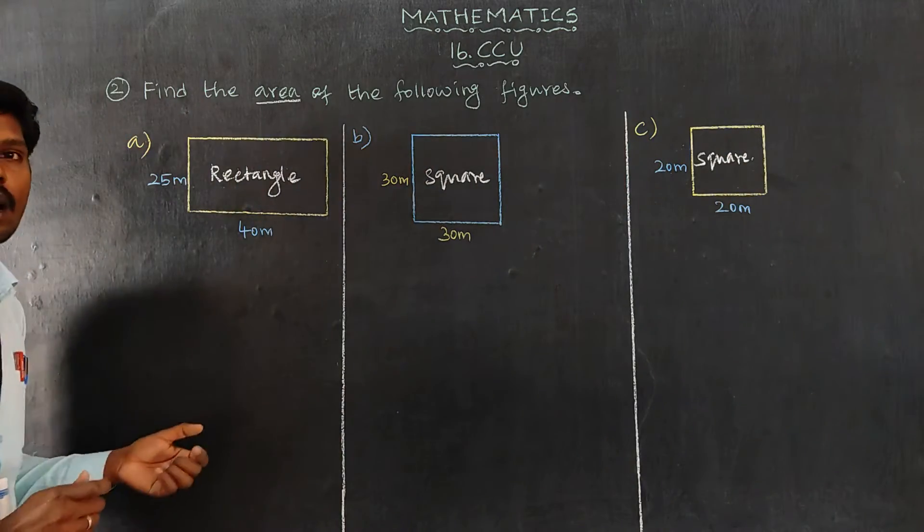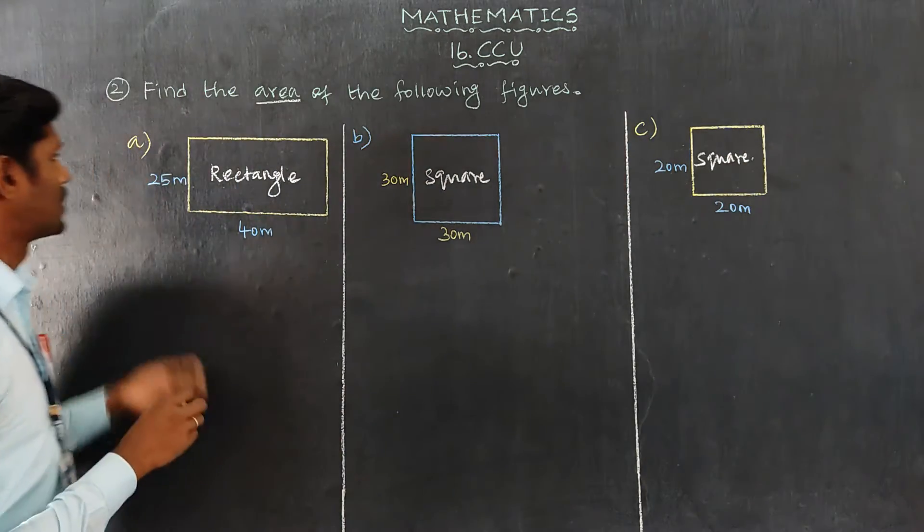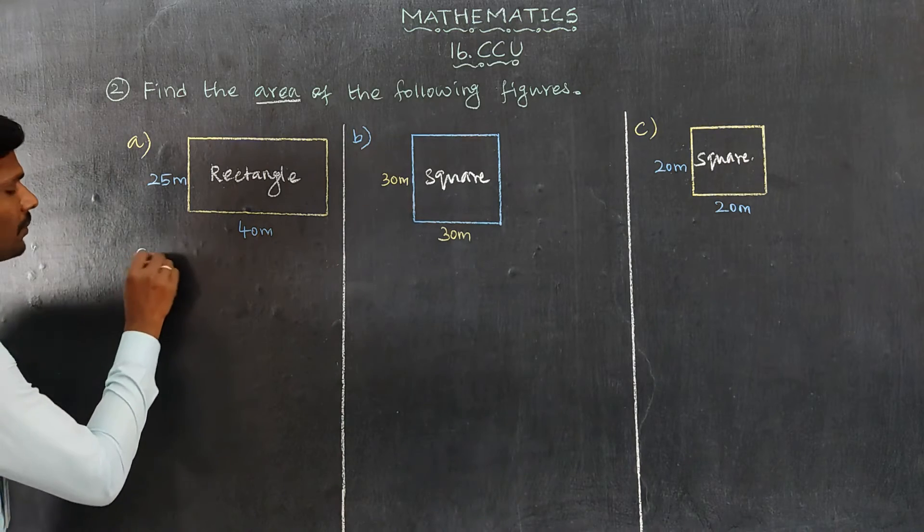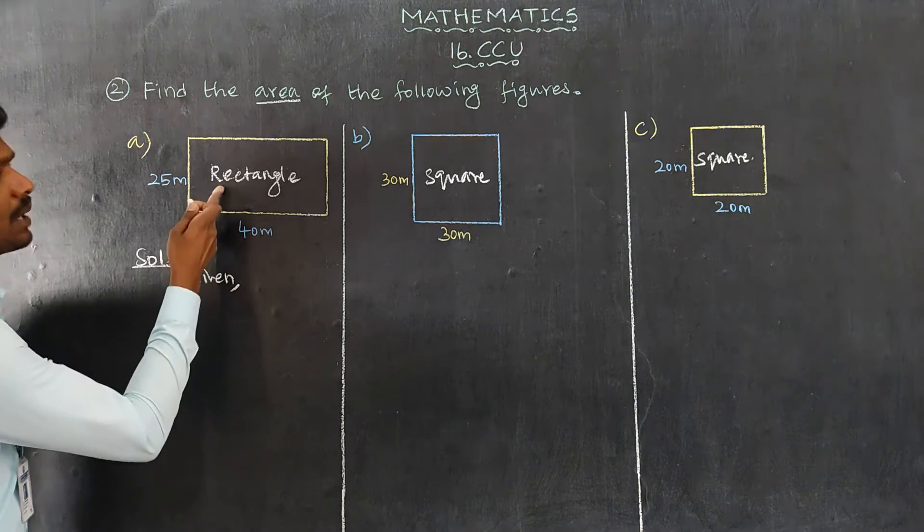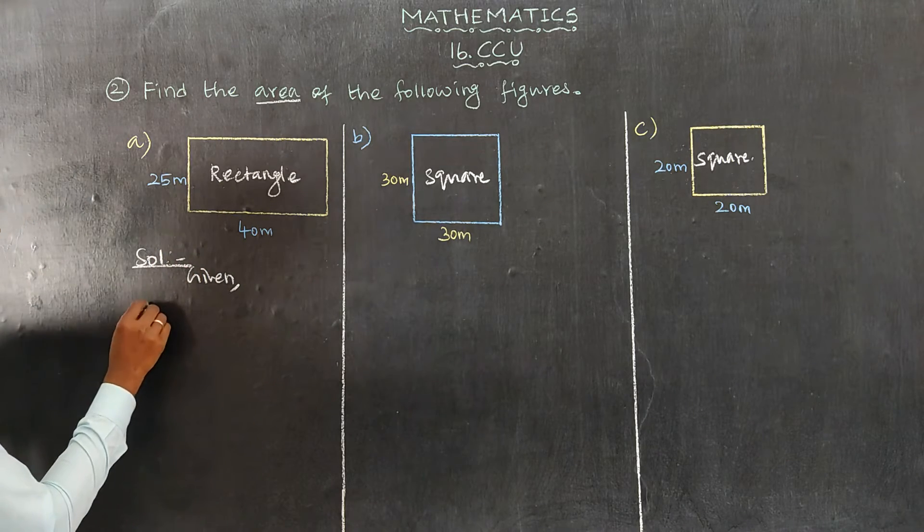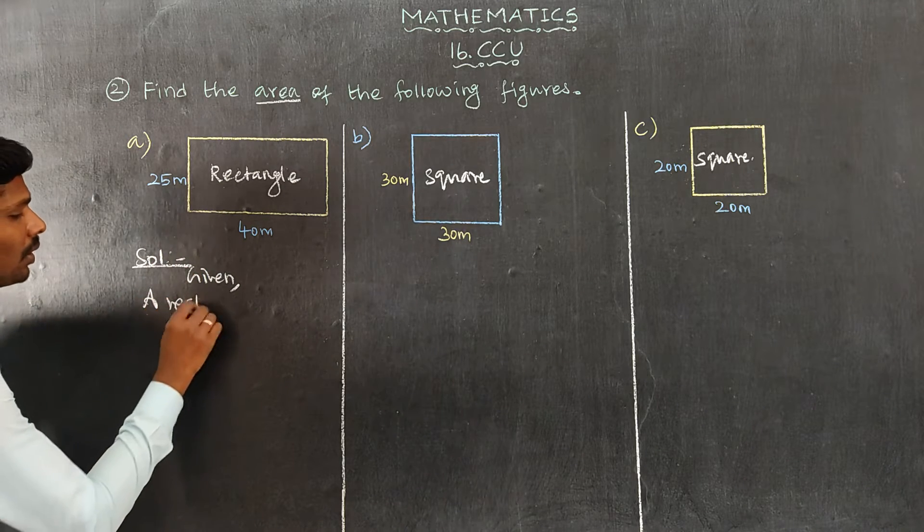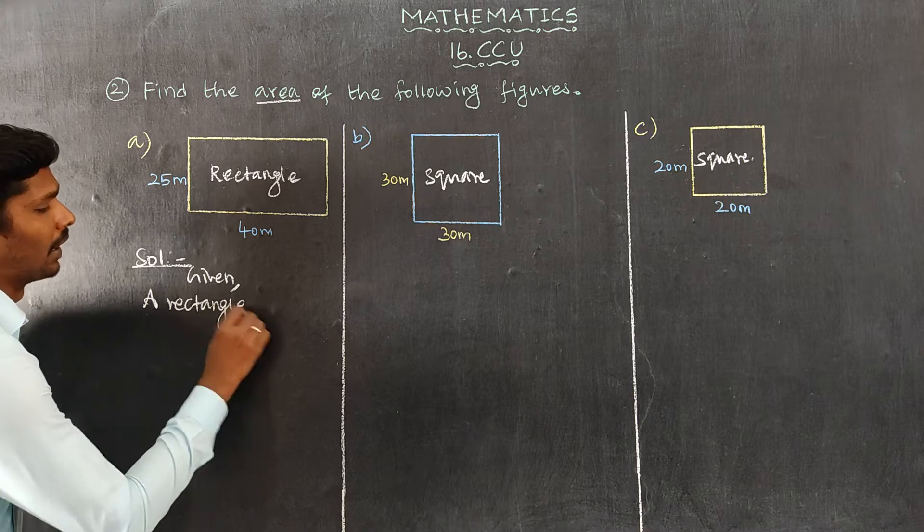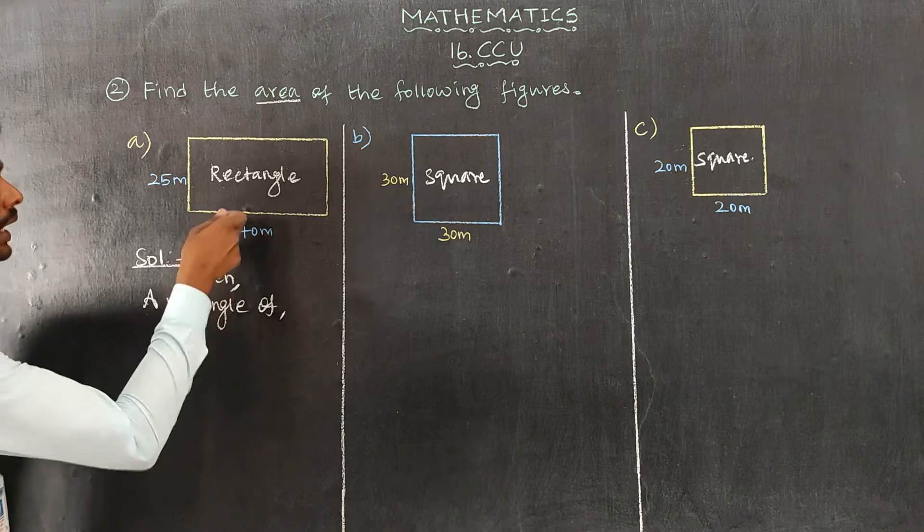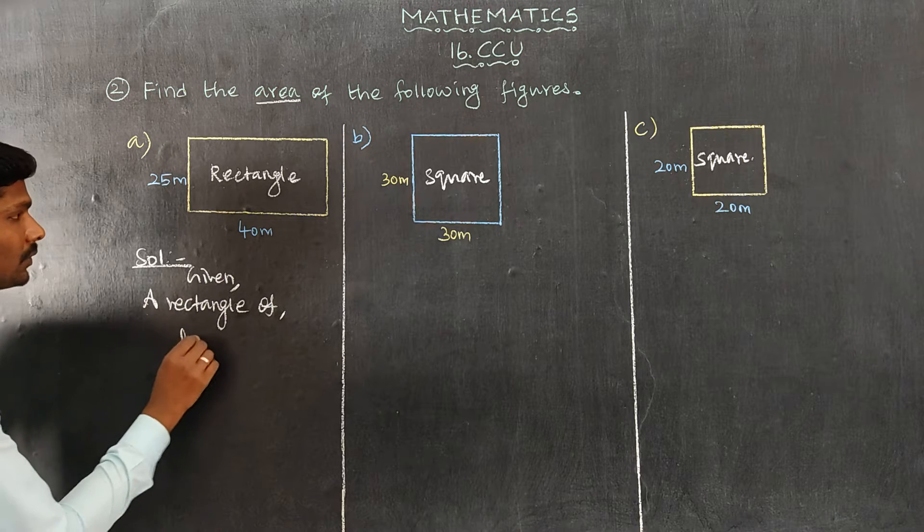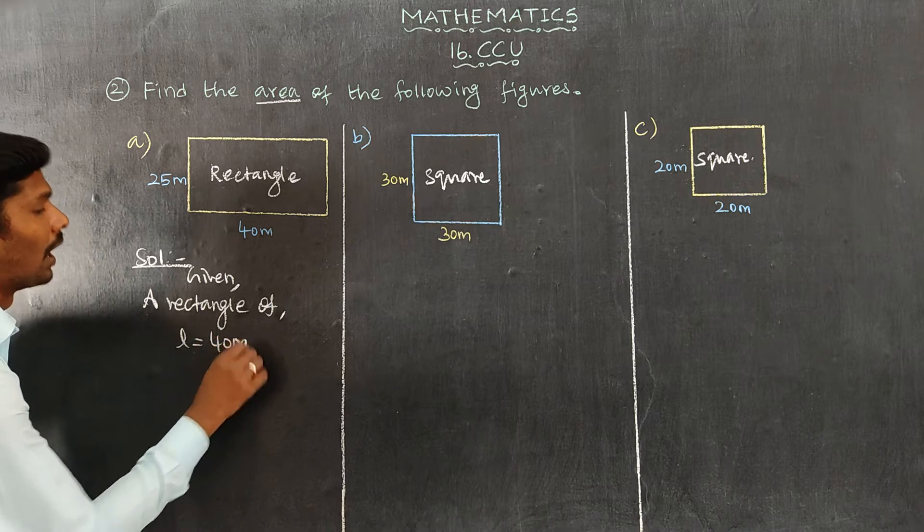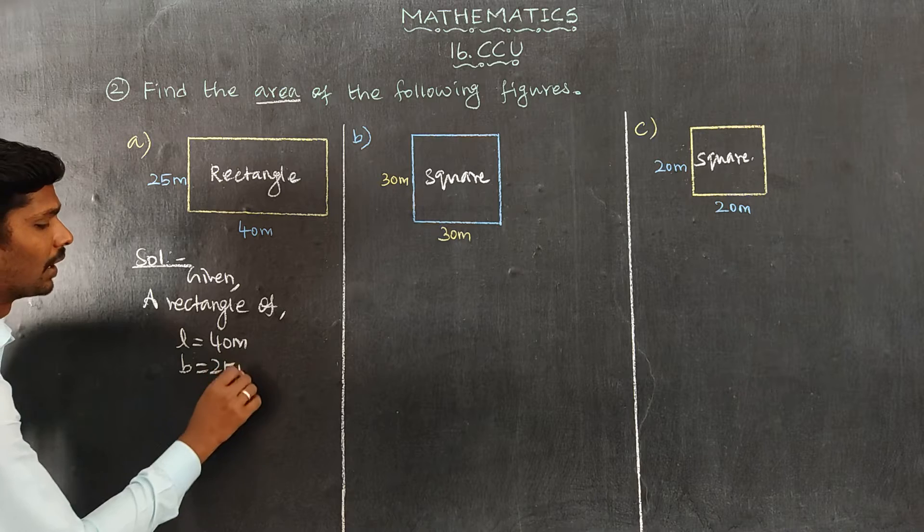Now, find the area of the following figures. First question A, solution: Given, a rectangle of length L equals 40 meters and breadth B equals 25 meters.